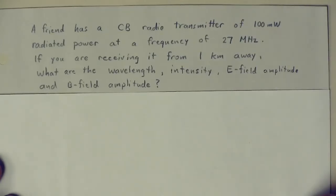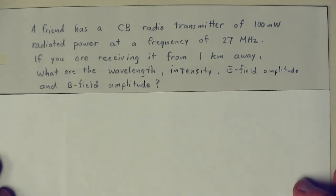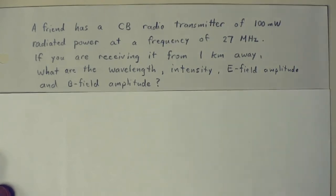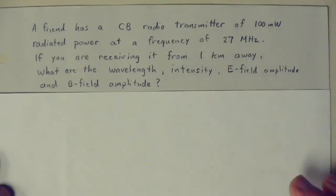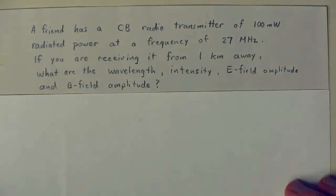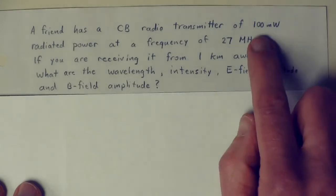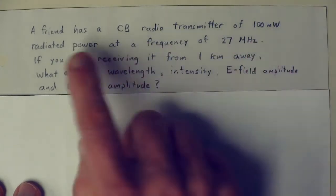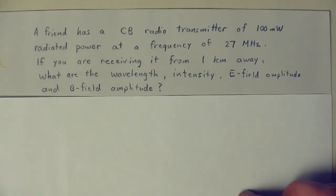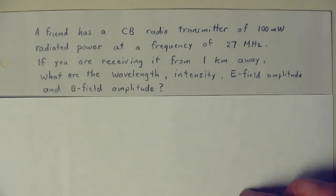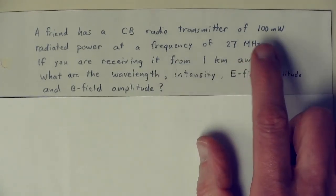This is week 11, part 6. Let's do some examples. Imagine you've got a friend who has a CB radio transmitter. These are the kind that truckers use to communicate with each other when they're out on the highway. It's got a fairly short distance that it can operate over. Assume that they have a transmitter that can produce 100 milliwatts of radiated power. So that's the actual power in the wave that it's transmitting, in the radio wave that it's transmitting. It transmits at a frequency of 27 megahertz.